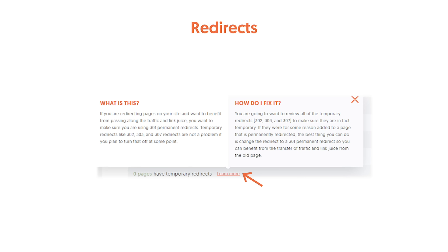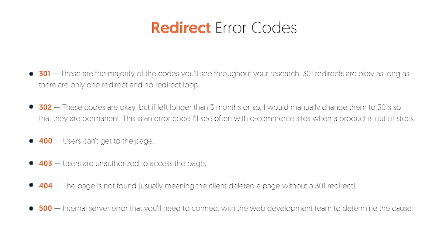Redirects — the report will tell you if you have redirects that are bad. You ideally want to use 301 redirects. Anytime you're using 302 or other types of redirects, they're not as good as 301s. 301s tell Google this page has moved, transfer all the links and equity, and rank this page really high in Google. A 302 is like saying we're temporarily not here right now but we don't know when we're coming back — that gives Google a fuzzy answer. So you want to use 301 redirects instead. They're okay as long as they're only used to redirect one page at a time.